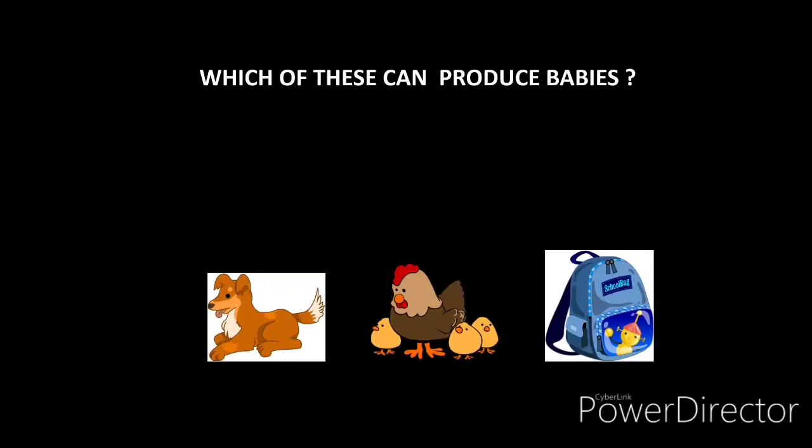Now tell me the next question. Which of these can produce babies? Have you seen a dog with its baby? Yes we have seen dog with its baby. Have you seen a hen with its babies? Yes, hen also have babies. Have you seen a school bag with its baby? No, school bag does not produce any babies.